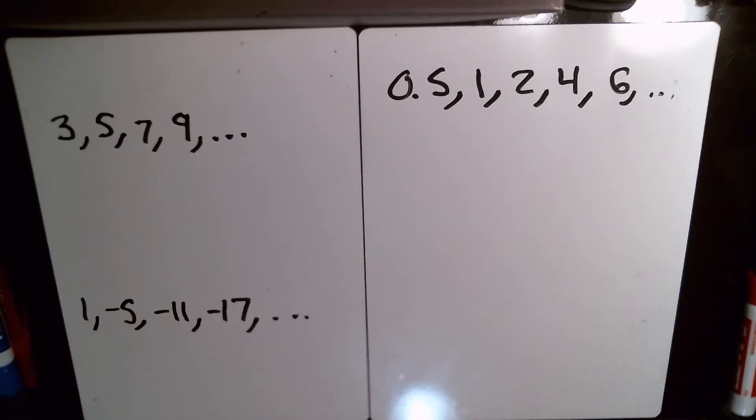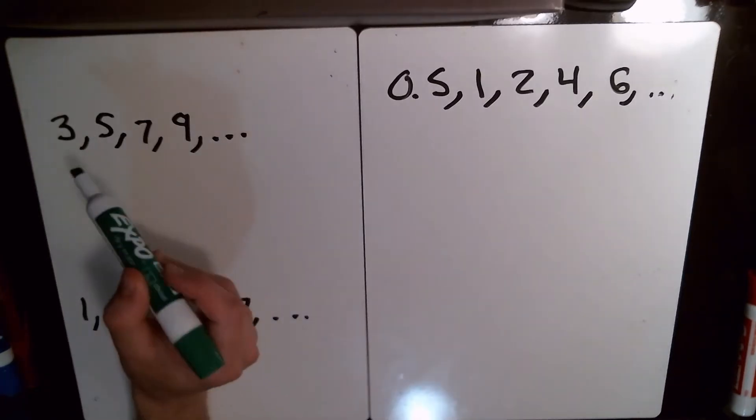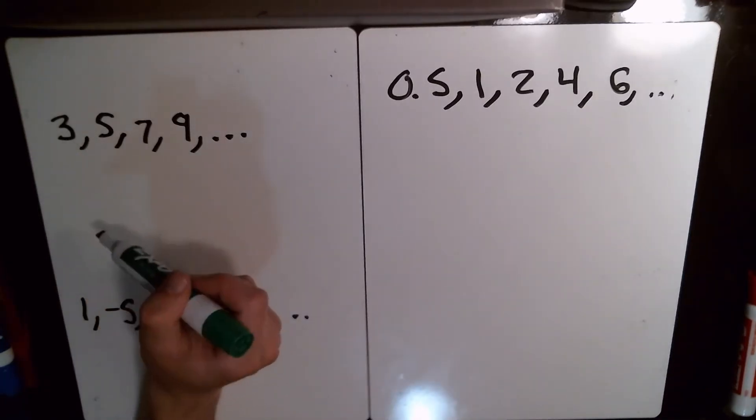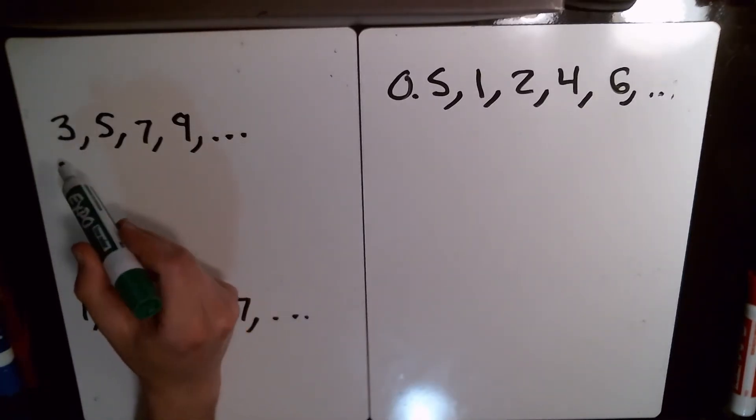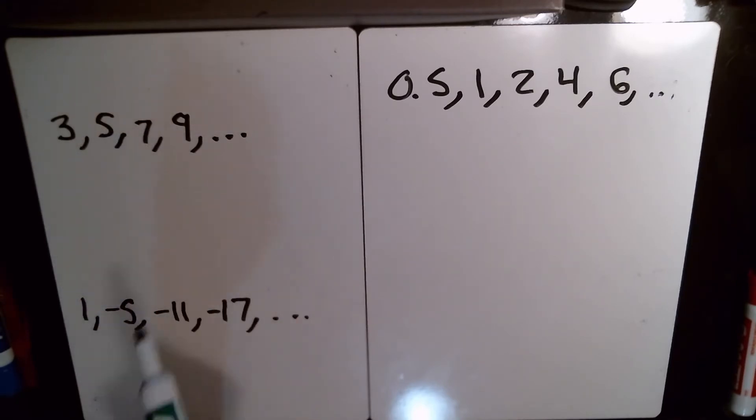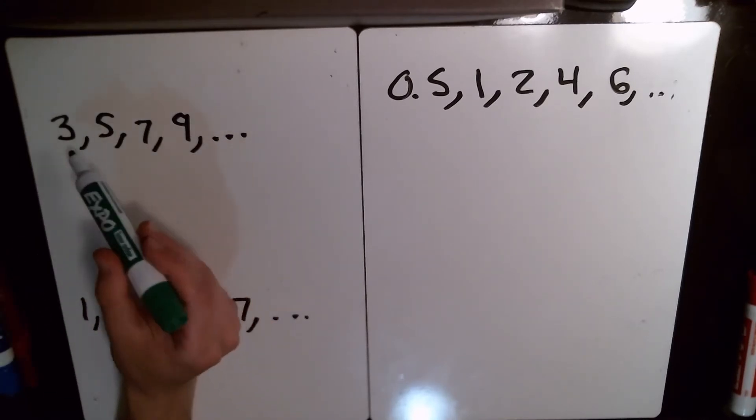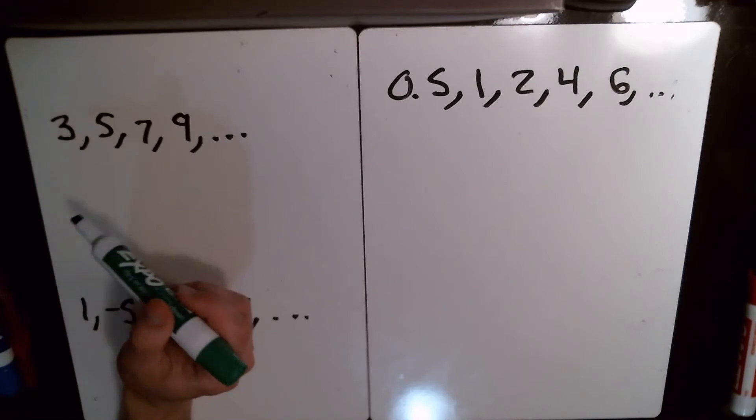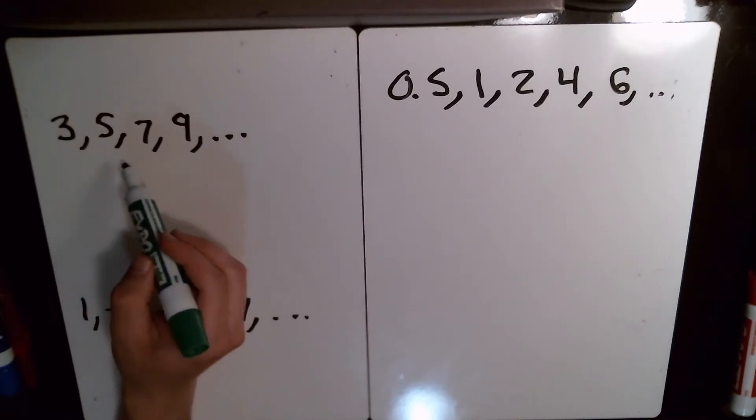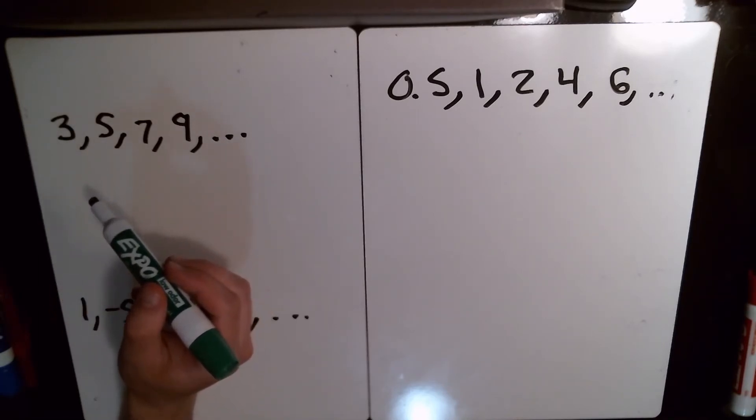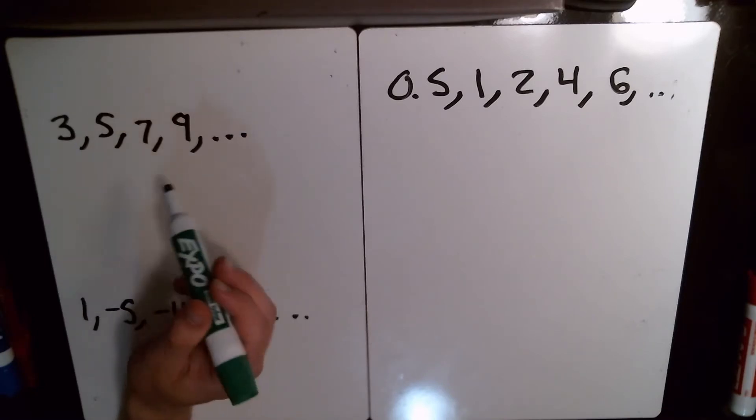This isn't too bad to do, but let's look at this first culprit here. Our sequence is 3, 5, 7, 9, and it keeps going. What is happening between these terms? Well, let's figure out the difference between the terms. If it's the same all the way through, it will be an arithmetic sequence.